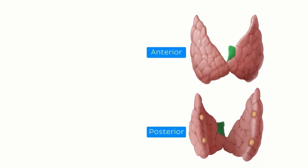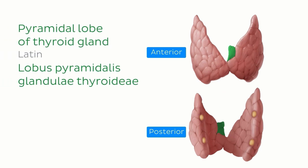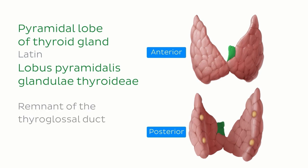In many people, there can be a smaller third lobe, which is only present in about 40% of the population. This is the pyramidal lobe of the thyroid gland and can vary in size and appearance. It is thought to be a remnant of the thyroglossal duct, which is present during development. Functionally, however, it is the same as the other lobes of the thyroid gland.